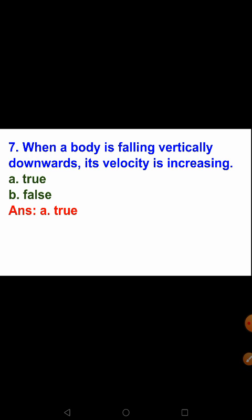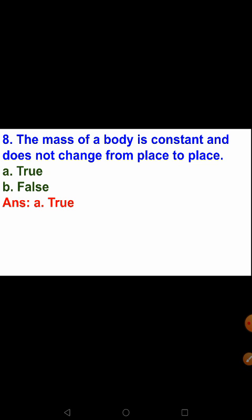True or false: when a body is falling vertically downwards, its velocity is increasing. Whenever an object is falling downwards, its velocity obviously increases — this is true. Next true or false: the mass of a body is constant and does not change from place to place. Mass is the quantity of matter contained in an object, so it remains the same wherever the object is placed, while weight changes because g keeps changing. This statement is true.